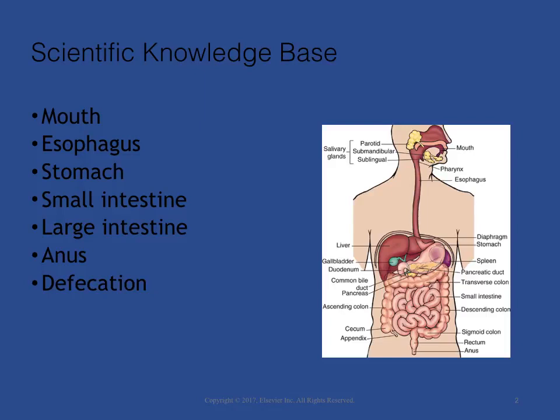The colon has three functions: absorption, secretion, and elimination. Peristaltic contractions move contents through the colon. Mass peristalsis pushes undigested food toward the rectum. These mass movements occur only three or four times daily, with the strongest during the hour after mealtime. The rectum contains vertical and transverse folds of tissue that help to control expulsion of fecal contents during defecation. Each fold contains veins that can become distended from pressure during straining, resulting in hemorrhoid formation.